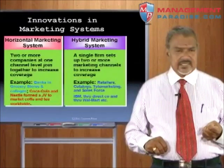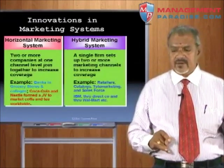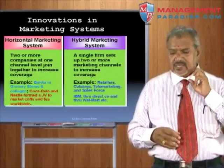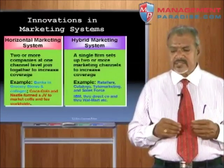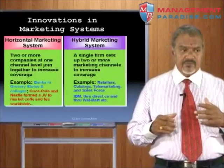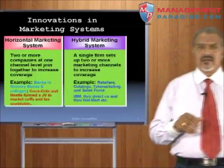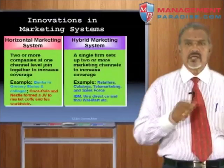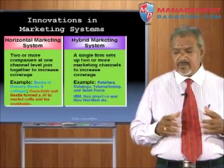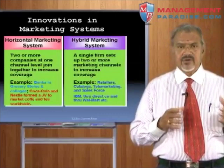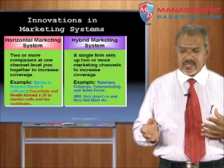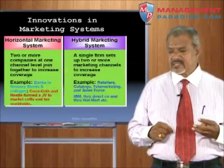Innovations in marketing systems include the vertical marketing system, horizontal marketing system, and hybrid marketing system. In horizontal marketing, two or more companies at one channel level join together to increase coverage. For example, banks open counters in large engineering colleges, or Coca-Cola and Nestlé formed a joint venture to market coffee and tea worldwide. This is called the horizontal marketing system.